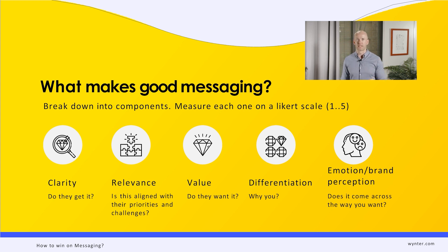Number two, relevance. Is what you're offering, what you're communicating, is it aligned with the priorities and challenges at hand of the target customer? Three, value. There's the promise of value that you have. You're making some sort of offer, get this benefit. Do they want it? Four, differentiation. Why you? You probably have 10 to maybe even 100 direct competitors plus countless indirect competition. Why you? Five, brand perception or emotion. Do you come across the way you want to come across?